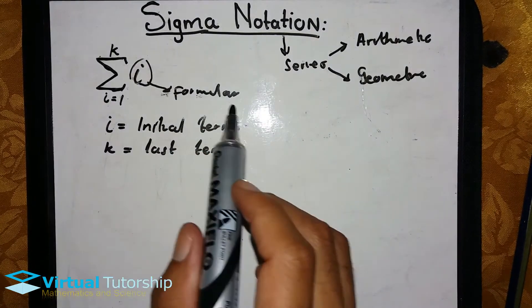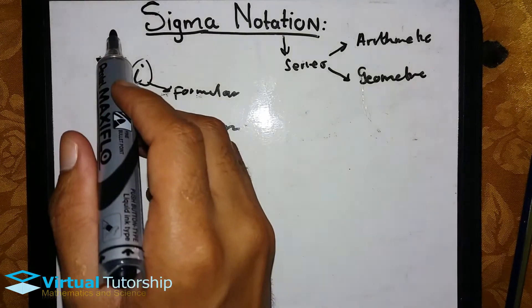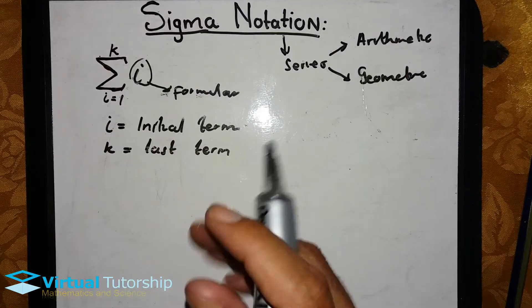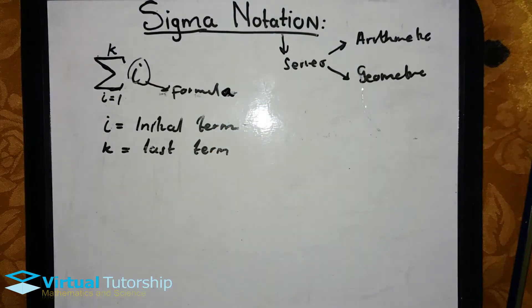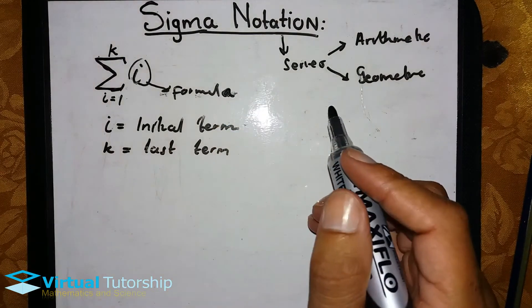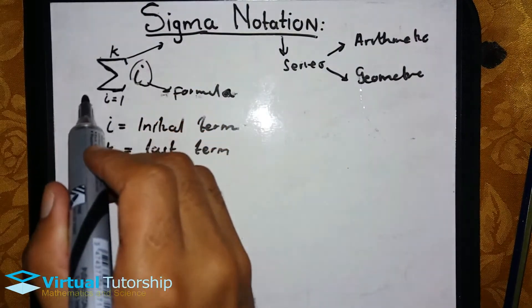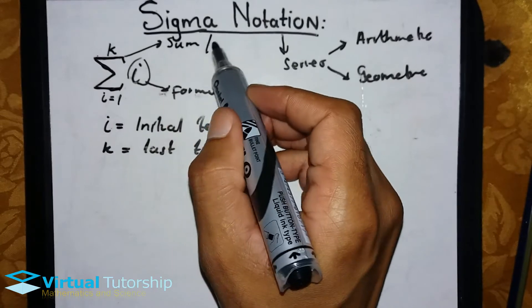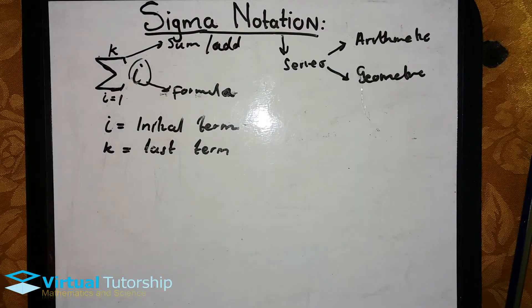The i at the bottom will represent that the initial term will be substituted in your formula, and then the k will represent that the last term will be substituted in your formula. This Sigma represents the sum or addition.